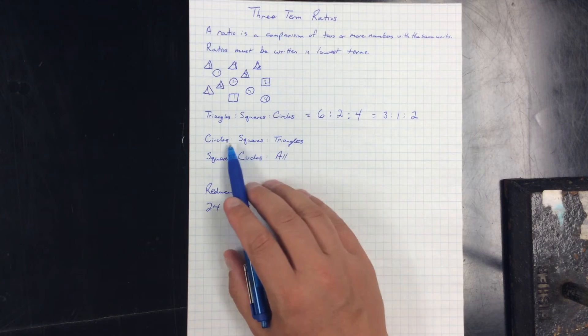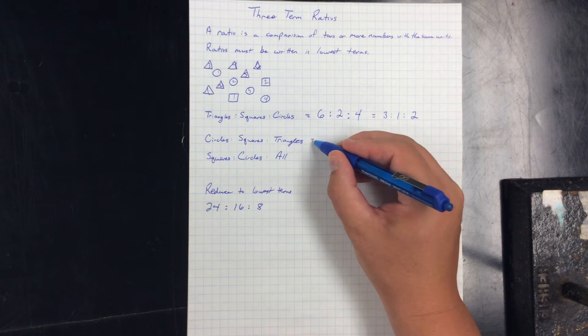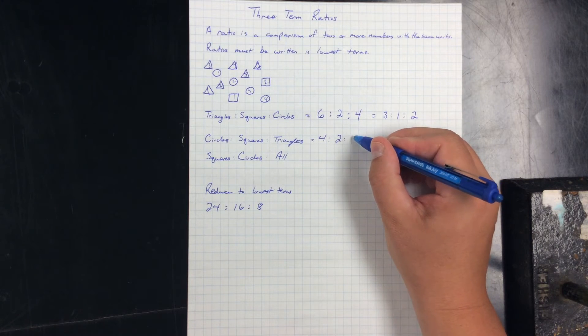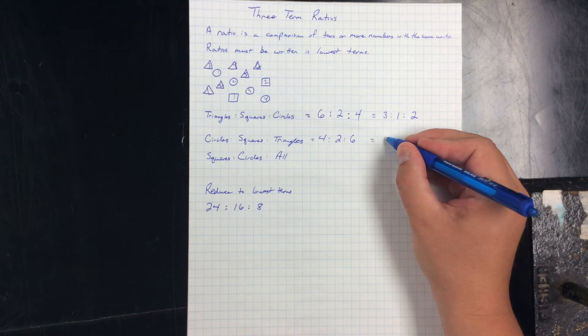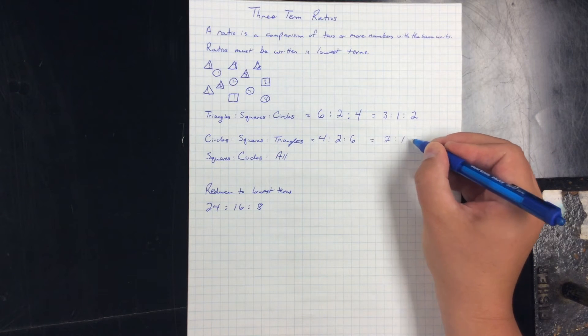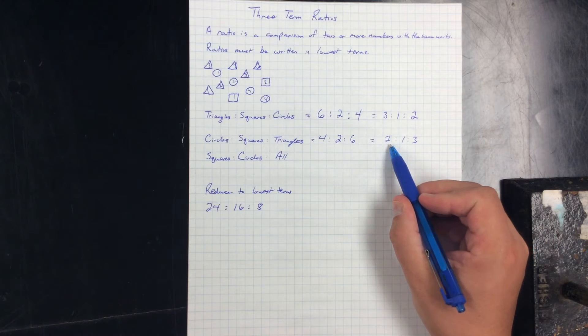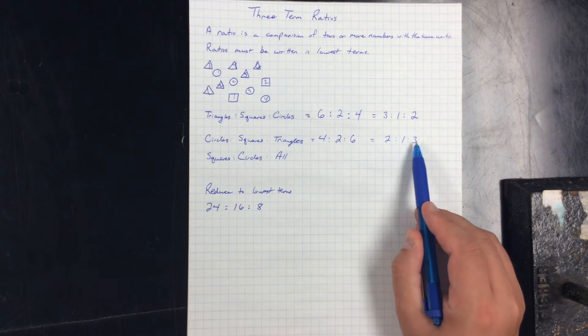Circles to squares to triangles. It's the same set, it's just reordered. So circles, there are four circles, two squares, and six triangles. Four to two to six, which we know is going to divide by two, so it can be two to one to three. The order has changed, but we need to be keeping the order that they were given.